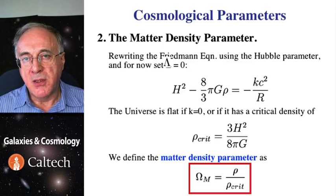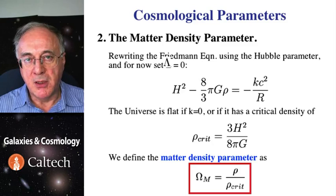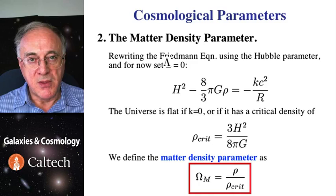Note that the critical density is determined just by the Hubble constant at that time. The ratio of the actual density of the universe to this value gives the omega matter, the density parameter. If the density is exactly equal to critical, then omega matter is 1 and universe is flat.